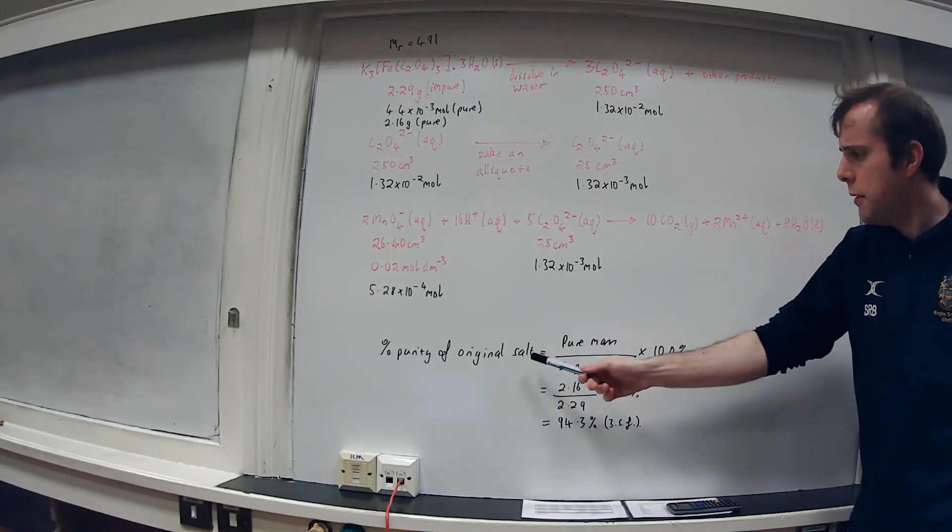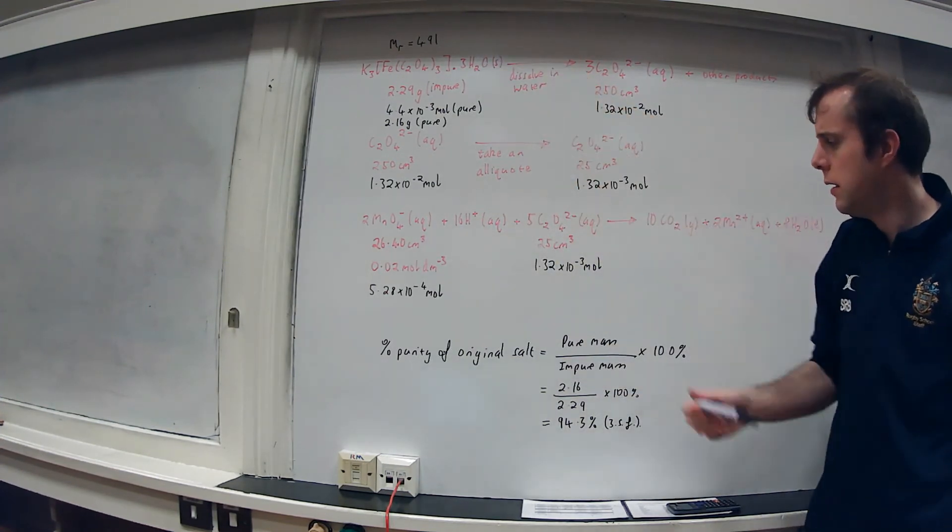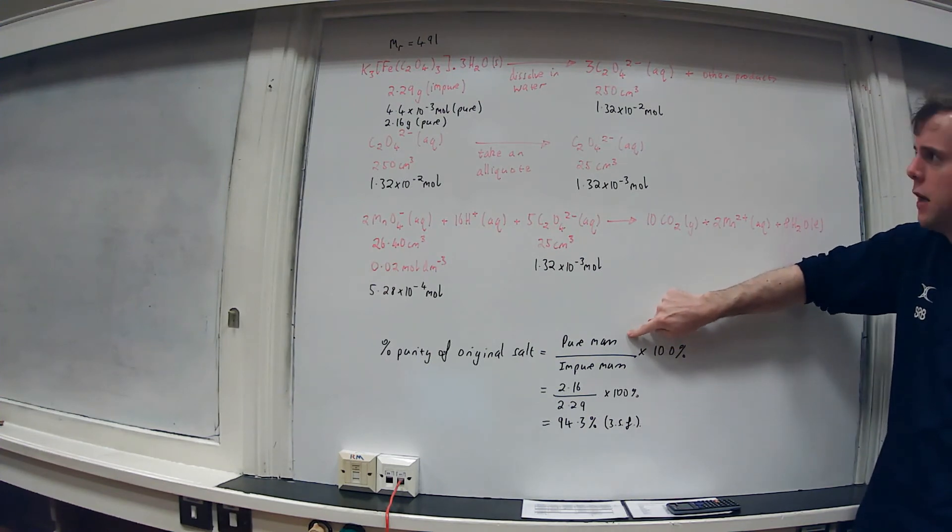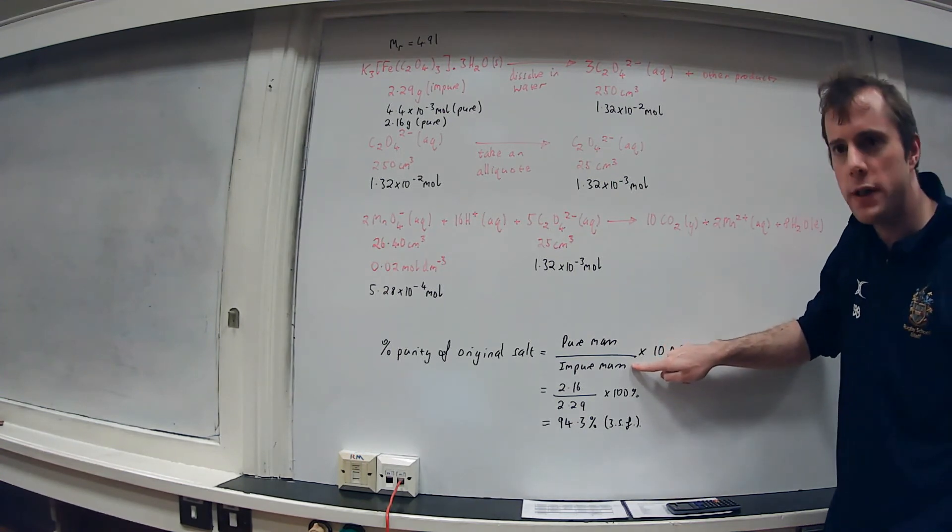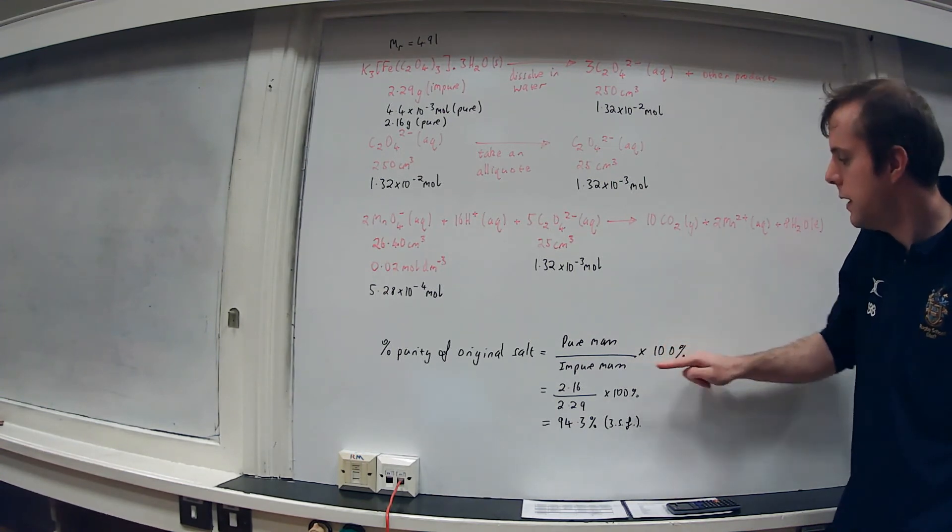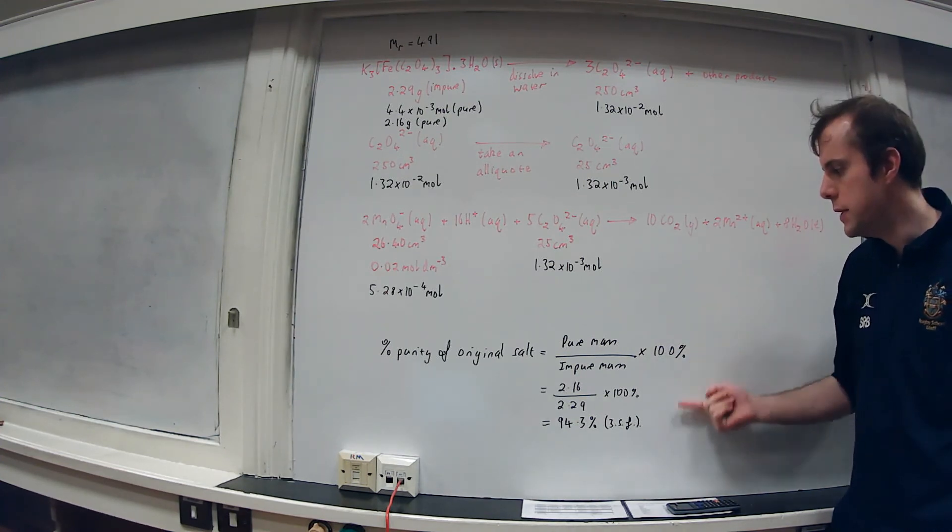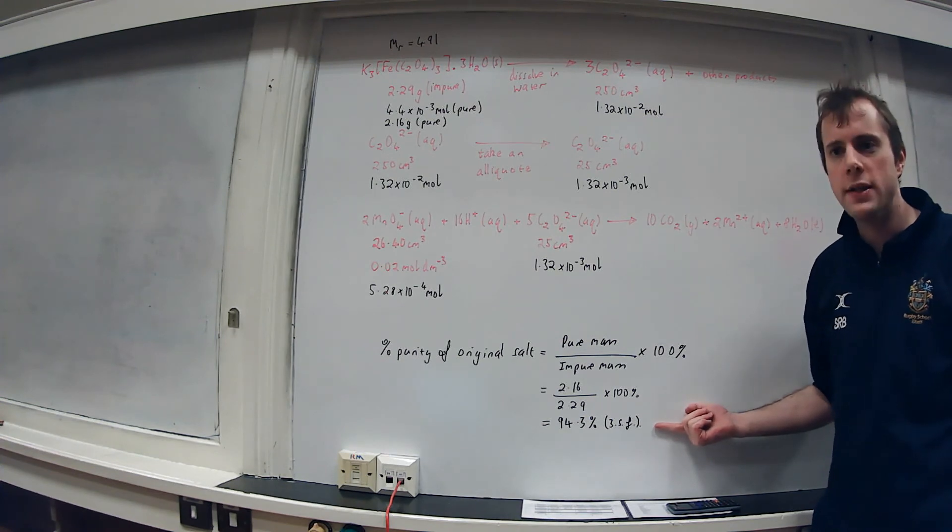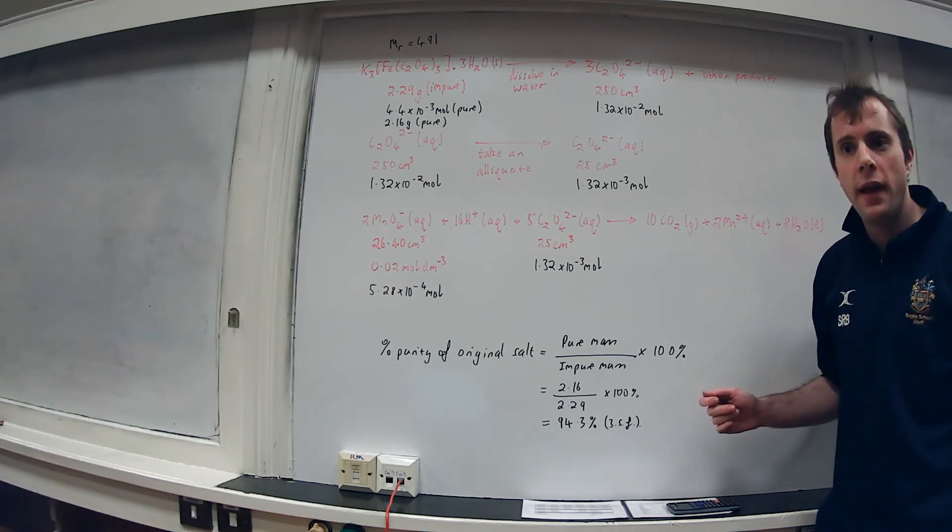As you can see, the percentage purity of the original salt, this one up here, is going to be the pure mass which we've just calculated as 2.16 grams, divided by the impure mass given in the question which is 2.29 grams, and then multiplied by 100 to make it a percentage. When we do that we get a value of 94.3% taken to three significant figures. This type of calculation is very common at A level.